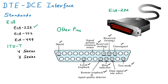Pin number 7 is Signal Ground, or common return. Every electronic circuit has a ground — a reference point. Like in home wiring, there is a black wire for negative, a red wire for positive, and a green wire for ground. Ground ensures that in case of a short circuit, the fault current is safely dissipated and no one receives a shock. Similarly, pin number 7 serves as the signal ground and common return.